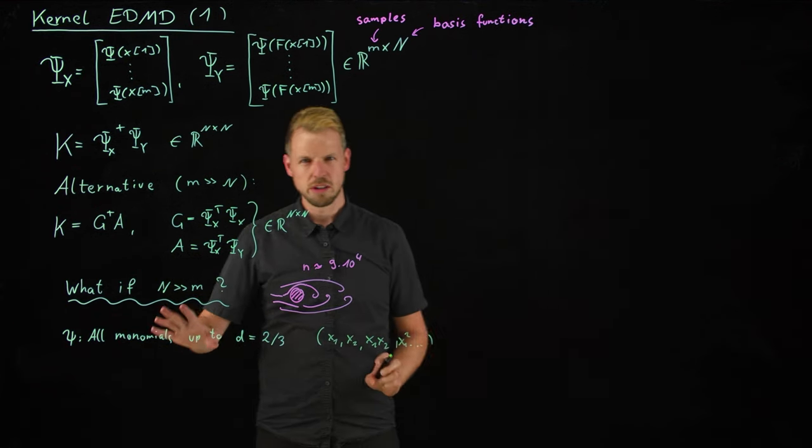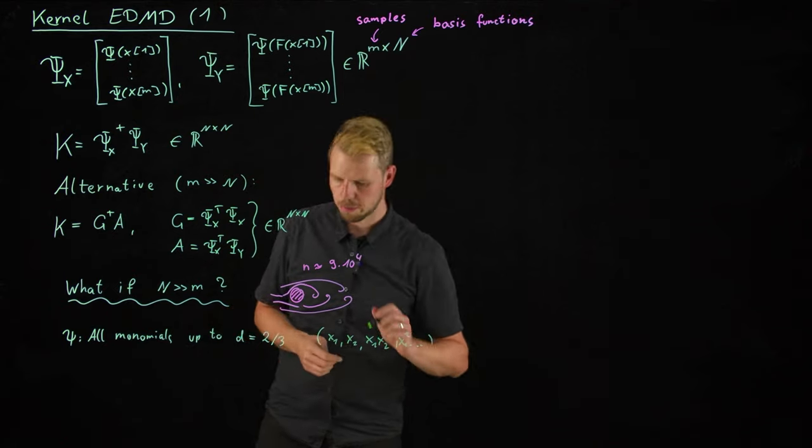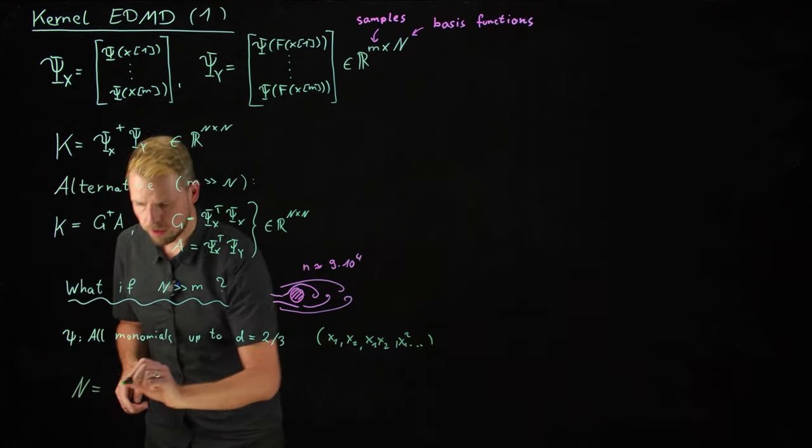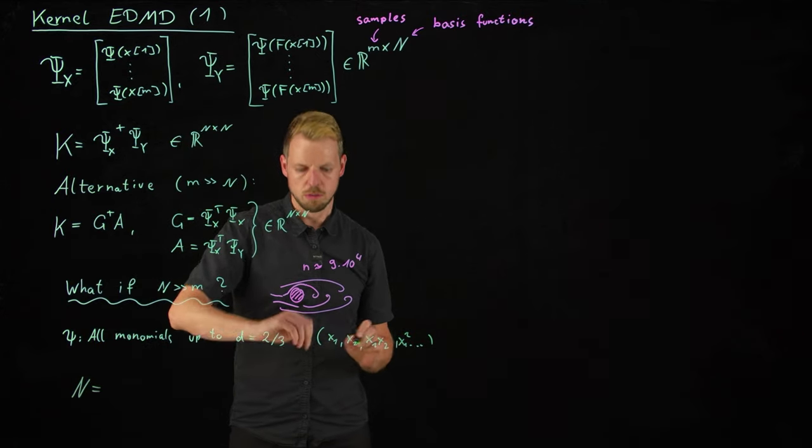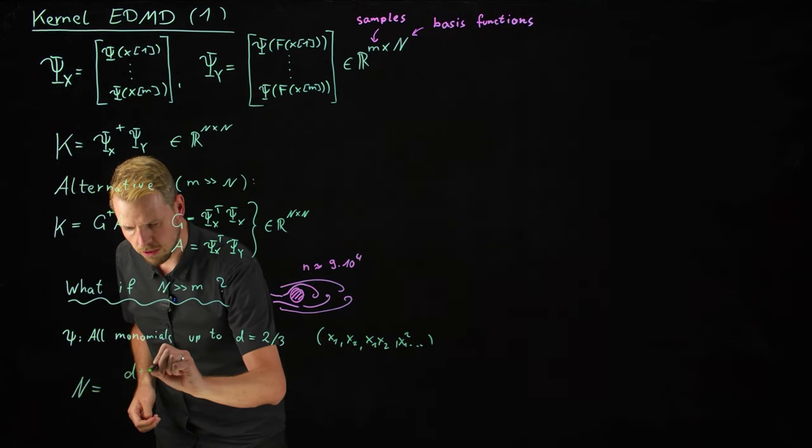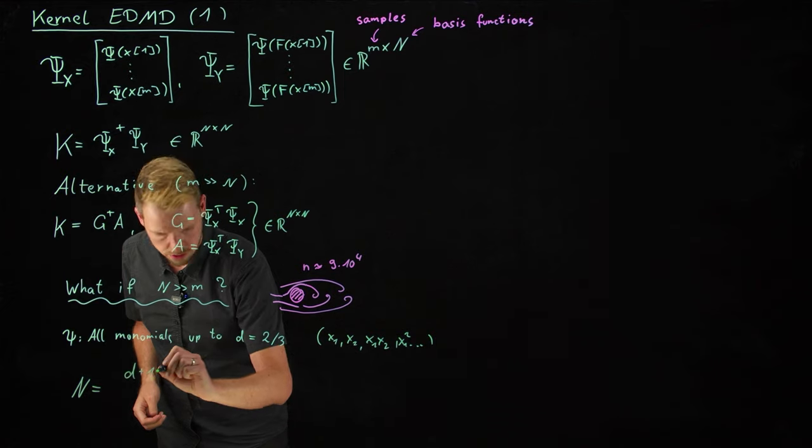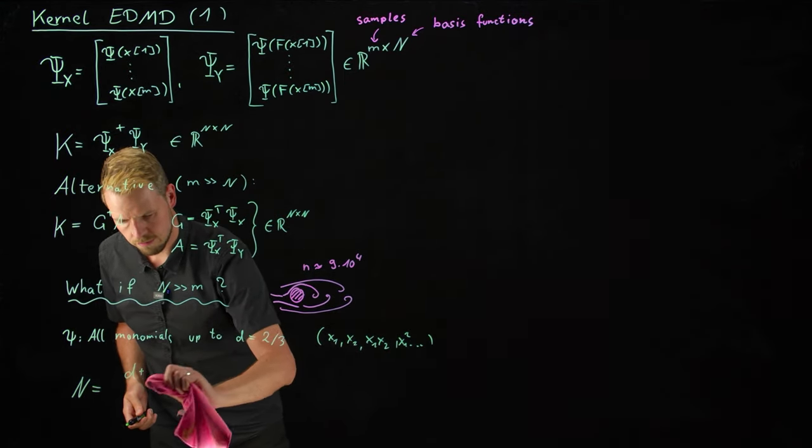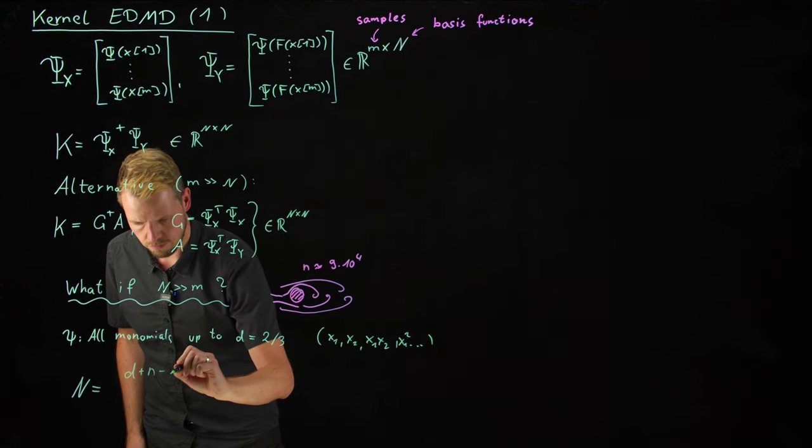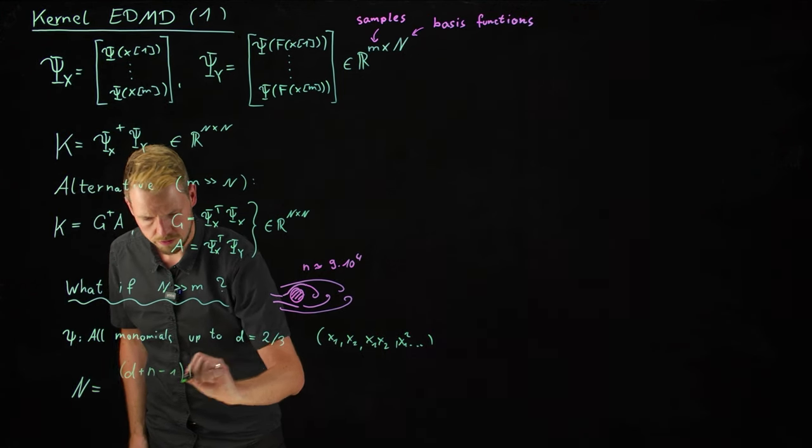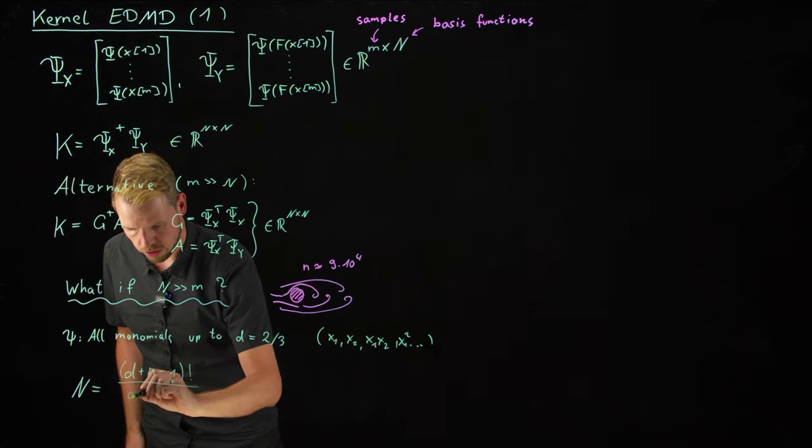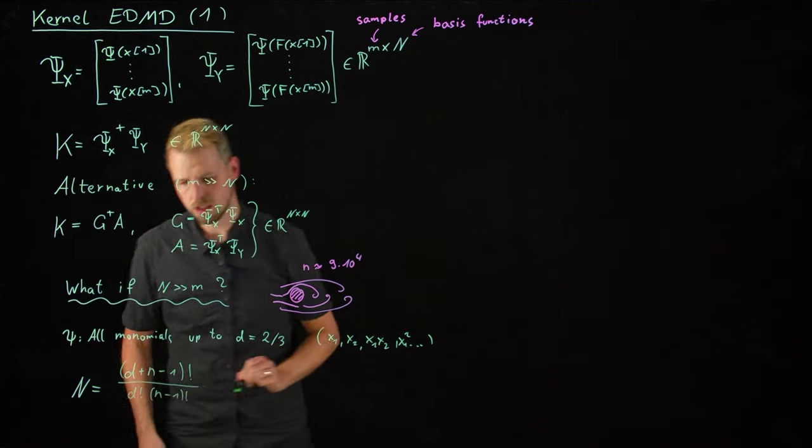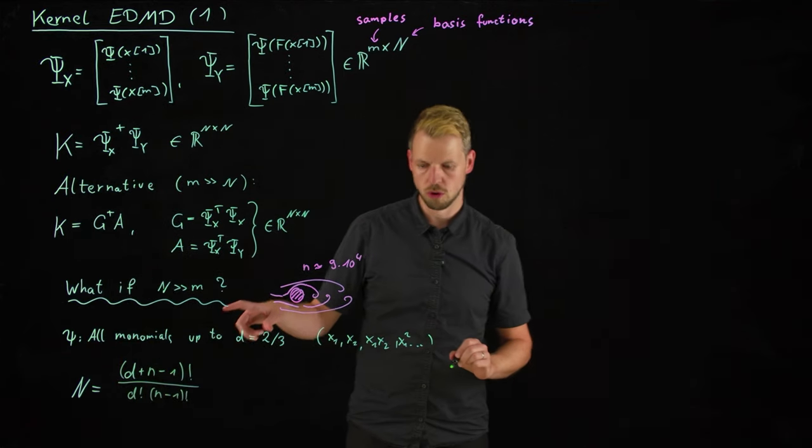And so I can do one straightforward calculation. You can look this up in Wikipedia, for instance, or other sources as well. The number that we get for n, if we consider all these monomial combinations, is given by (d + n - 1)! divided by d! times (n - 1)!. And this factorial already tells us this is going to grow very, very quickly.